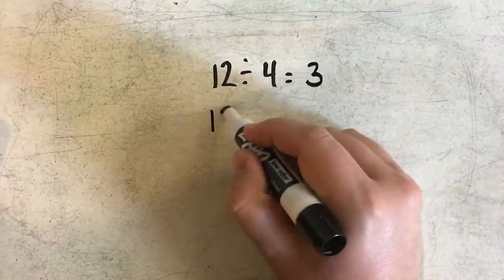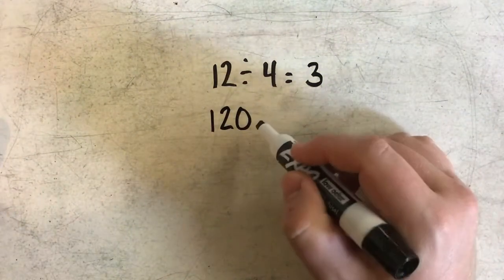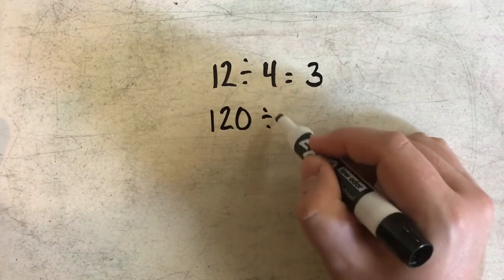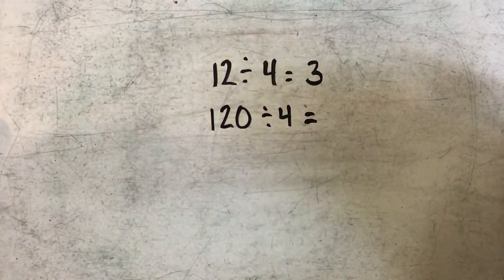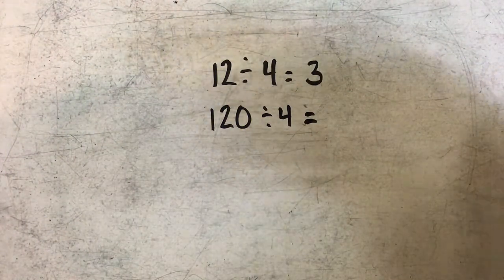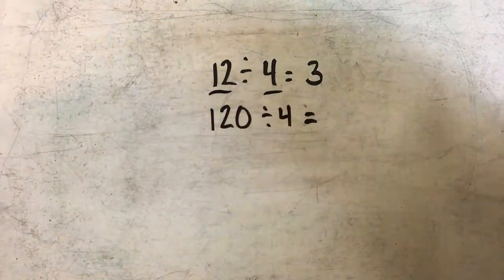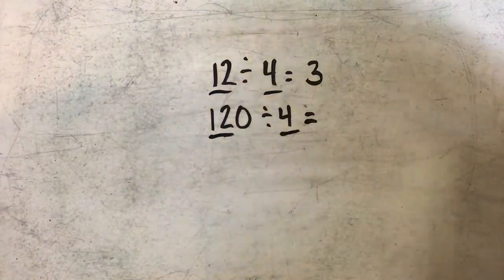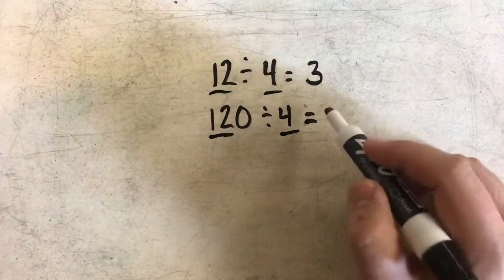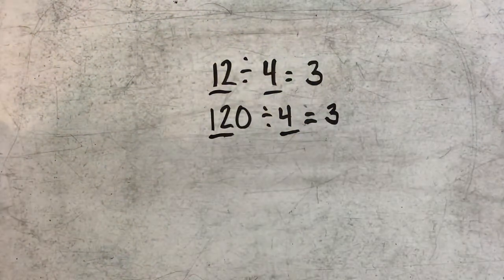If I multiply 12 by 10, I have 120. If I divide 120 by 4, I'm going to find that same basic fact of 12 and 4. I have 12 divided by 4, which is still 3, so I include that in my answer.